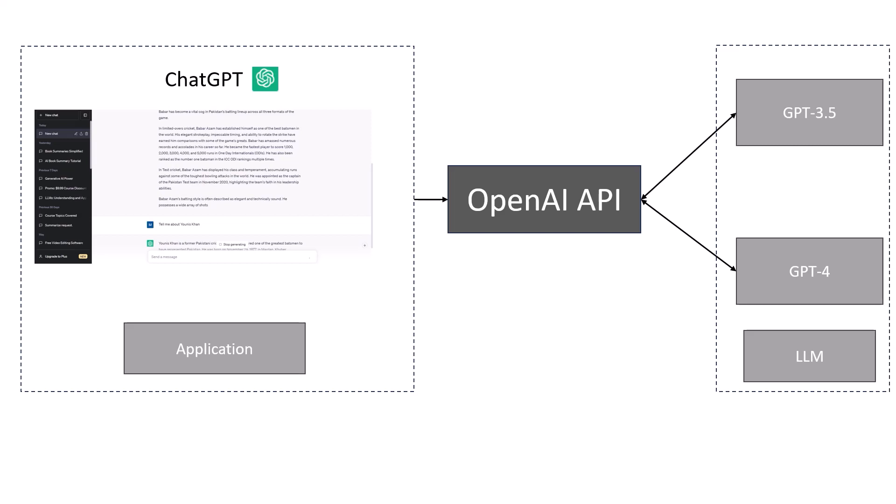Here you can see a complete block diagram. Let me explain this step by step. In the first part you can see ChatGPT, which is an application — and there are many other applications as well. ChatGPT makes a call to the OpenAI API, and the OpenAI API internally makes a call to GPT models like GPT 3.5 or GPT 4.